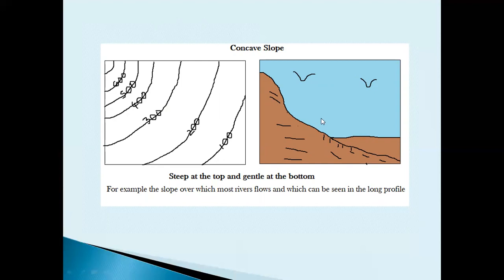Looking at the slope in cross-section, notice that at the top the land falls steeply, and then the closer we get to the bottom, the gentler it gets. This is a concave slope.